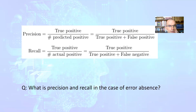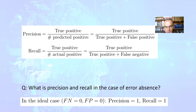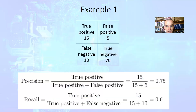We can now introduce the concepts of precision and recall. Precision is the ratio of true positive decisions to the sum of true positive and false positive decisions — in fact, it means the ratio of true positive decisions to the total number of predicted positive decisions, both true and false. Recall is the ratio of true positive decisions to the number of actually positive decisions — for example, to the number of patients which actually had the disease — and this equals true positive divided by true positive plus false negative. In the ideal case with no errors, both precision and recall will be equal to 1.